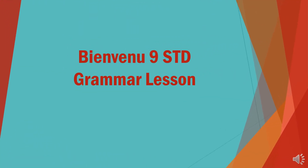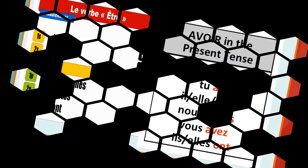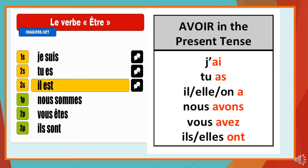This is a grammar lesson for 9th standard students. Before we go on to the topic, let's do a quick revision of the two most important verbs that we have already done in the 8th standard — the verbs être and avoir. We have already studied them in the present tense in the 8th standard, so you need to know this before we proceed with the actual topic for today.